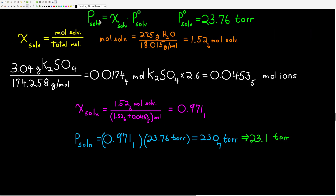Welcome back. To get the mole fraction of the solvent, we need moles of water divided by total moles in the solution. Moles of water equals mass divided by molar mass, giving about 1.53 moles. Then we find moles of potassium sulfate: mass divided by molar mass gives 0.0174 moles, multiplied by its Van't Hoff factor of 2.6, giving 0.04535 moles of ions. The mole fraction of the solvent is then 1.53 divided by (1.53 + 0.04535), which equals 0.971. Plugging into Raoult's Law: 0.971 × 23.76 torr gives a vapor pressure above the solution of about 23.1 torr.